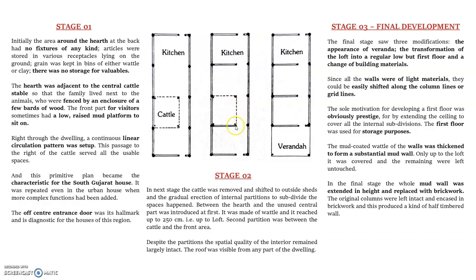This second stage somewhat resembles the North Gujarat type of arrangement — a veranda appears before the main order, and the key space develops. All these spatial relations started developing here. In the final stage, the grid remains the same; only the interior planning changes. Access goes: veranda → key space or visitors' space → private space → kitchen at the rear.